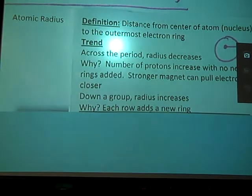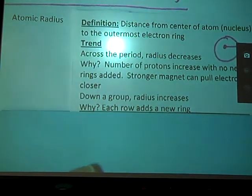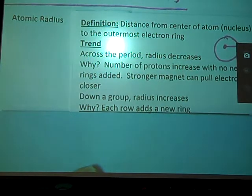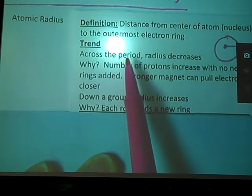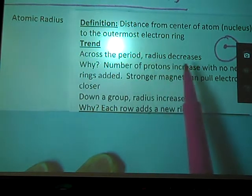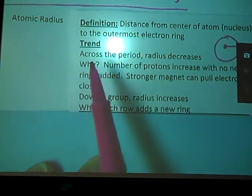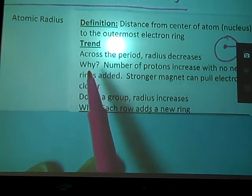The trend for atomic radius, in general there's always exceptions to every rule, particularly in chemistry, but in general as we go across the period, across the row, our radius decreases. Why? My students are so tired of hearing me say that.